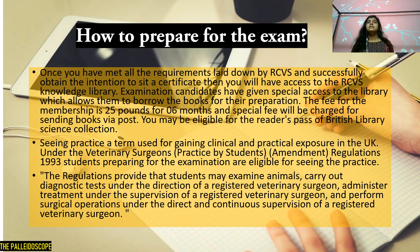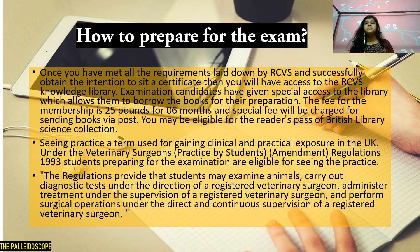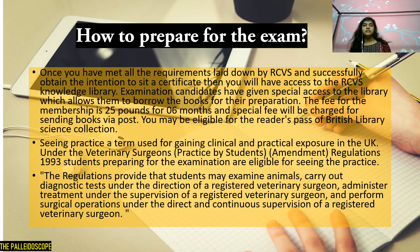How to prepare for this examination: once you've met all requirements laid down by RCVS and successfully obtained the intention-to-sit certificate, you will have access to the RCVS Knowledge Library. Examination candidates are given special library access allowing them to borrow books for preparation. The membership fee is 25 pounds for six months, with a special fee if you want books delivered to your home. You may also be eligible for the reader's pass of the British Library Science Collection.